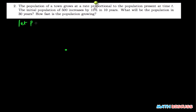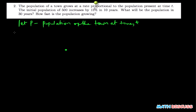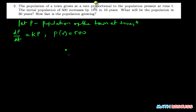Let p be the population of the town at time t. According to what we have here, the rate of change of the population is proportional to the population itself. We are also told that the initial population of 500 — initial population simply means when time is 0, the population is 500 — and that this population increases by 15% in 10 years.